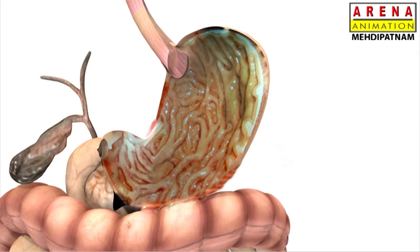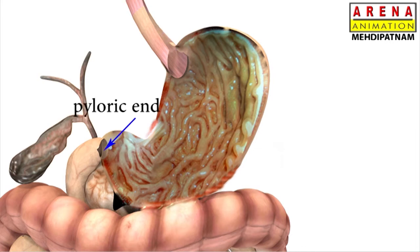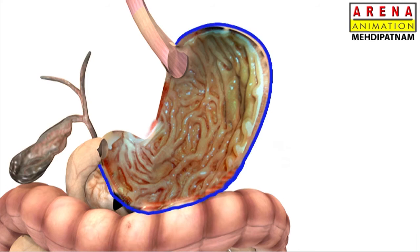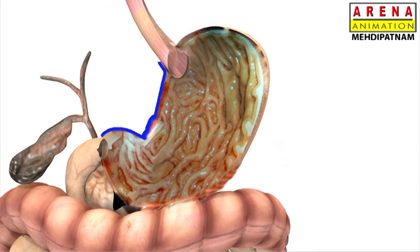The stomach has two ends: the cardiac end, where it receives the esophagus, and the pyloric end, where it opens into the duodenum. The stomach also has two curvatures — the greater curvature on the left and the lesser curvature on the right side.